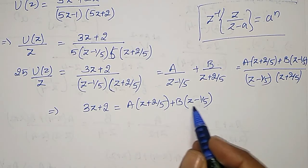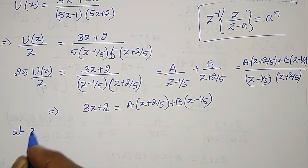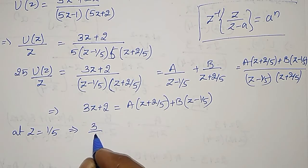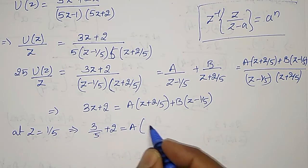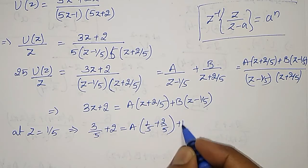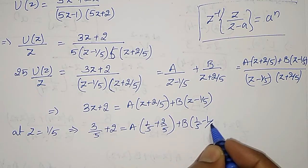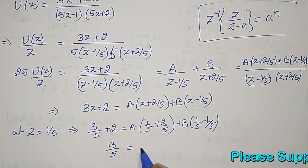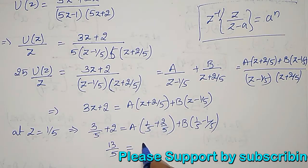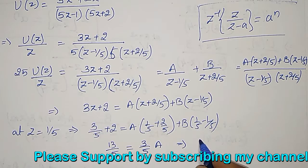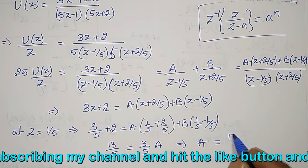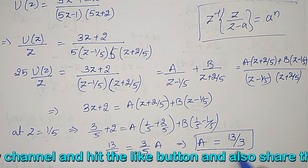To find A, let Z equal 1/5. Substituting: 3·(1/5) + 2 equals A·(1/5 + 2/5) plus B·(1/5 minus 1/5). The right side B term becomes 0. The left side gives (3 + 10)/5 equals 13/5, and the A side gives (3/5)·A. Therefore A equals (13/5) × (5/3) equals 13/3.